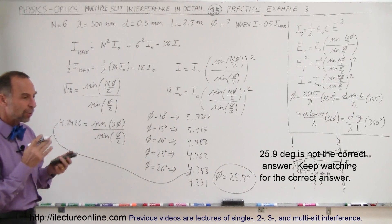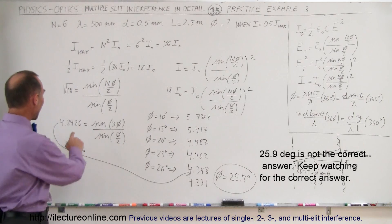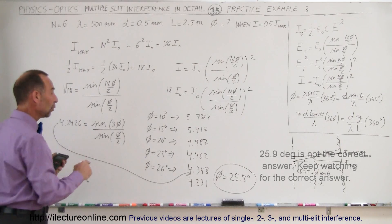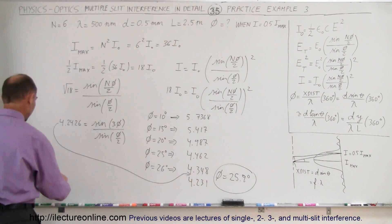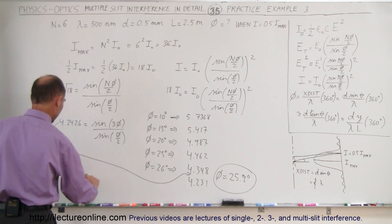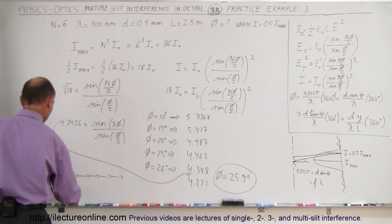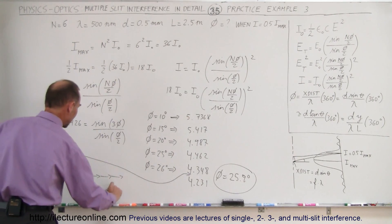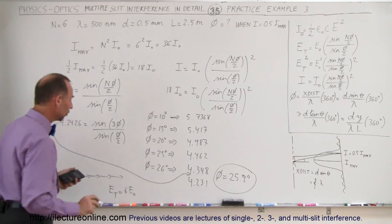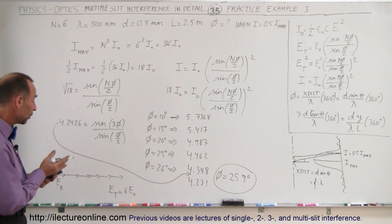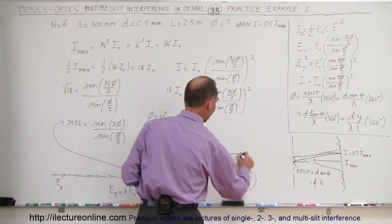The reason why it's so difficult to do, think about it. We have 6 phasors that we're adding together, and we know that the vector sum of those 6 phasors adds up to 4.24, when the vector sum of the 6 phasors, when they're lined up, adds up to 6. So imagine 6 phasors lined up like that.